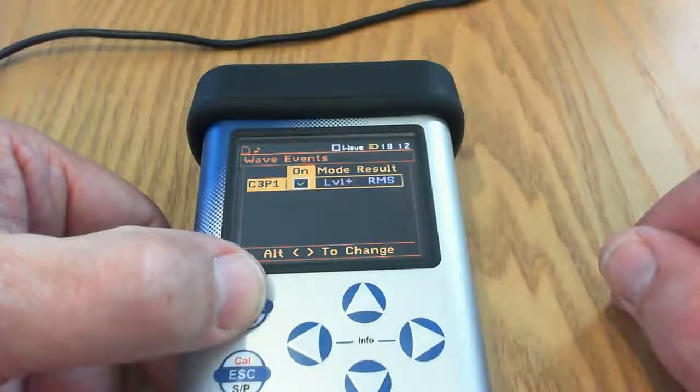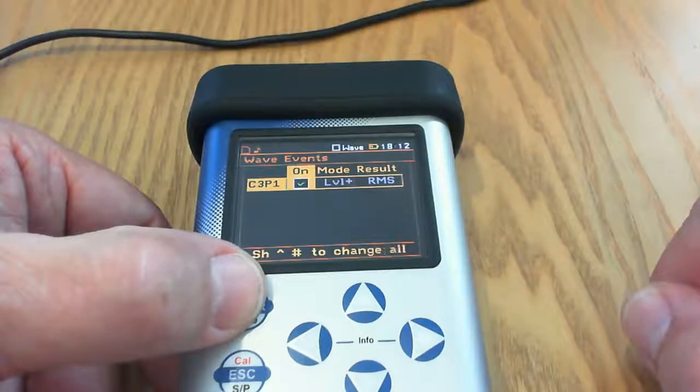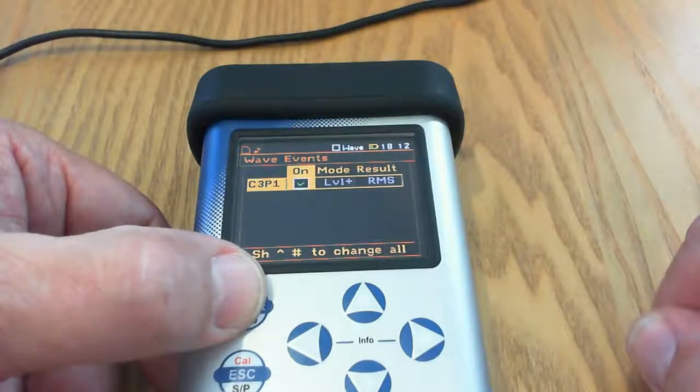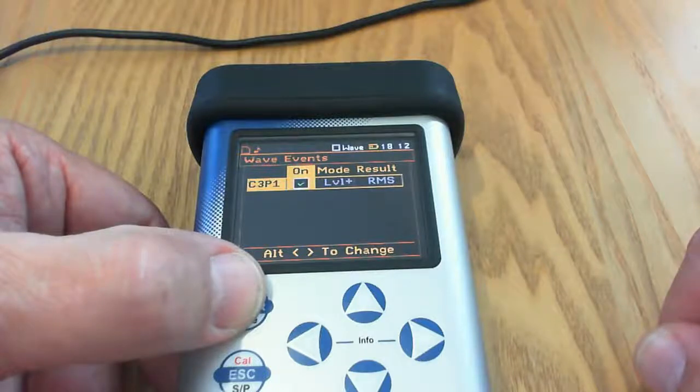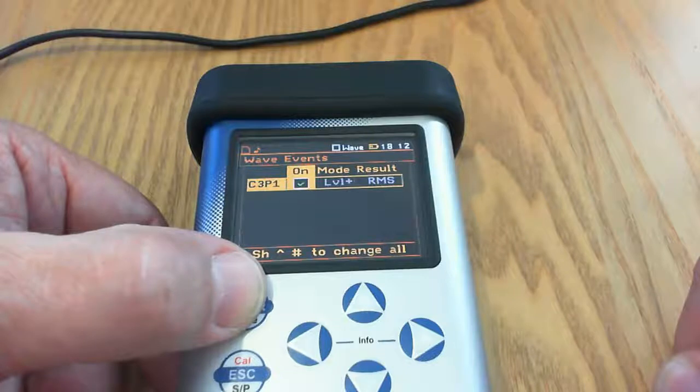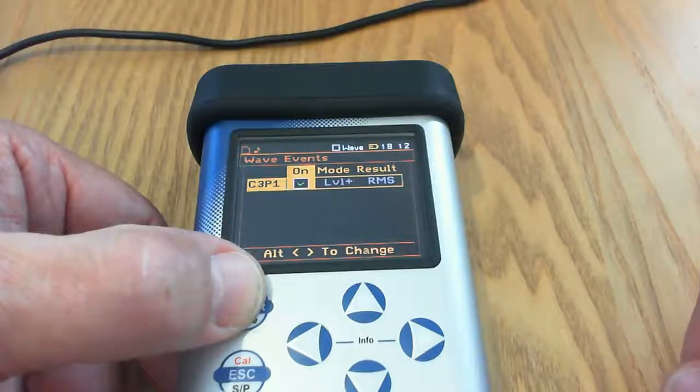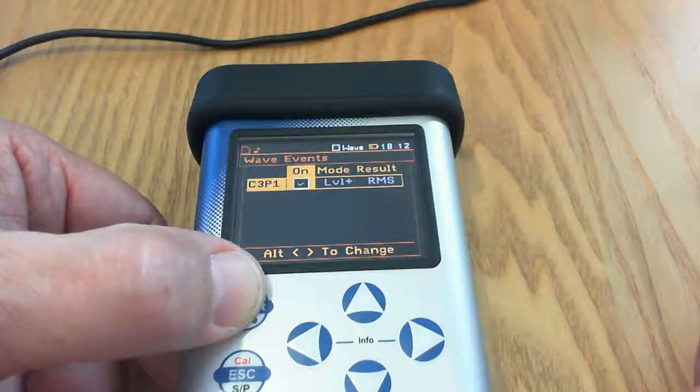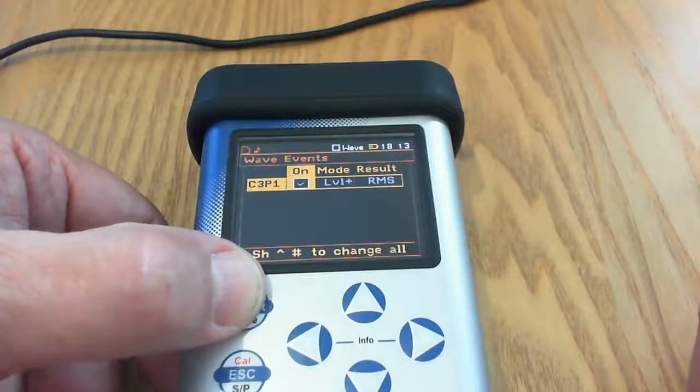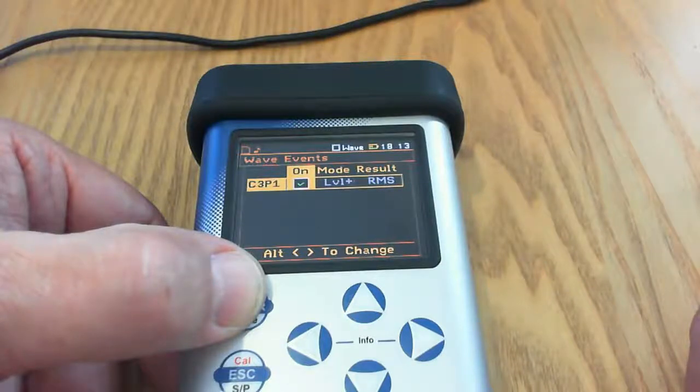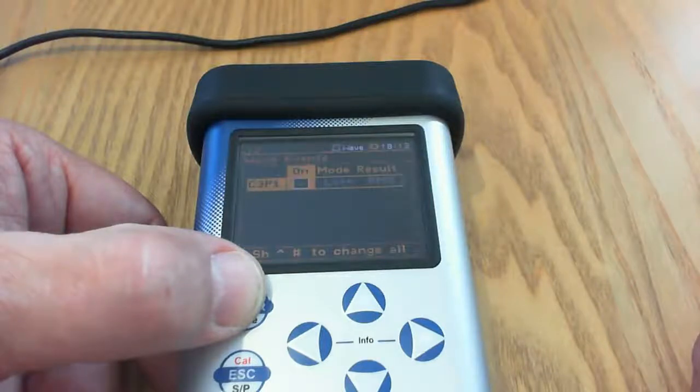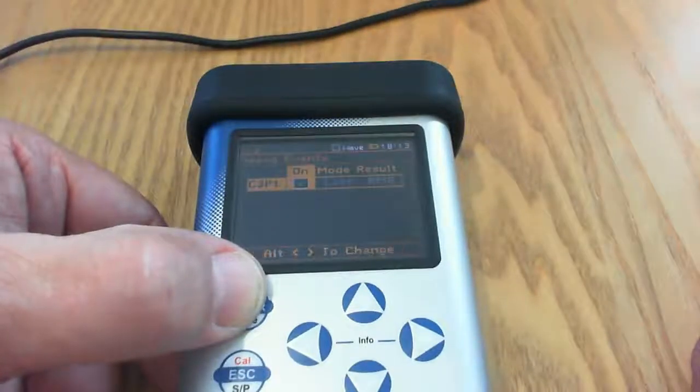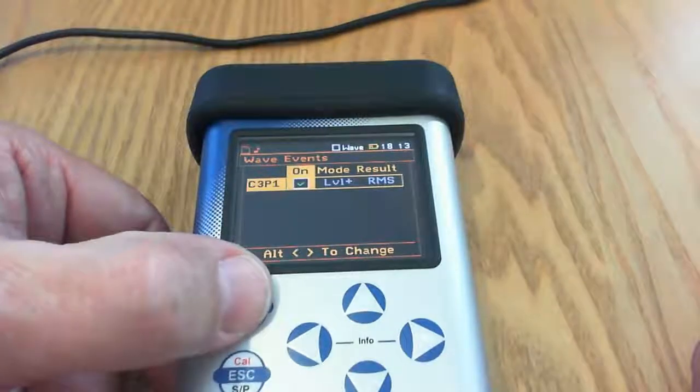Now we need to select the source of that trigger. Here you can see the trigger event that I defined in the other menu. You can see at the moment it's set to channel 3, profile 1. It's active, it's switched on, and the mode is the level going above a certain threshold and it's going to trigger off the RMS result. So that's it. Obviously you can see that you can put in some other triggers here as well to trigger the wave. You can make some quite complicated profiles. So that's it. We're all ready to go.